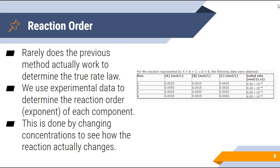The first method works great for very simple reactions, but a lot of times it doesn't tell us the true rate law. So we have to use experimental data to determine the reaction order — the exponent of each component. This is done by running multiple reactions and changing the concentration of each reactant to see how the reaction changes.